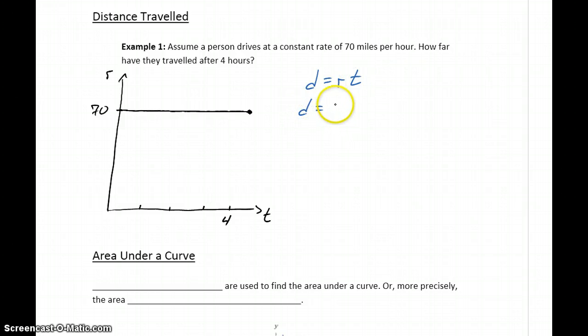Which in this case would be d equals 70 times 4, or 280. So if we travel for 4 hours at 70 miles an hour, we'll have driven a total of 280 miles.